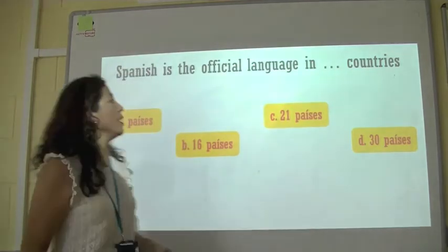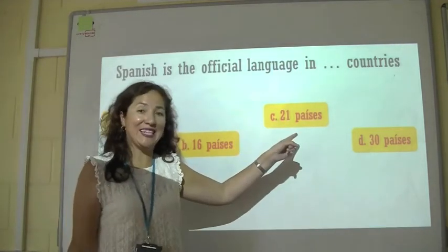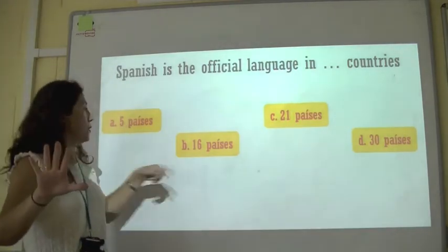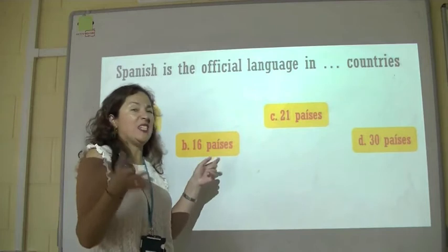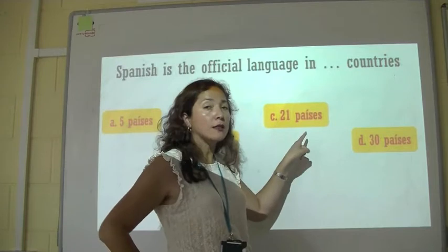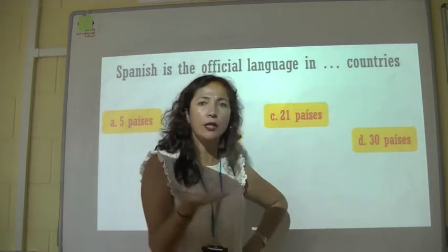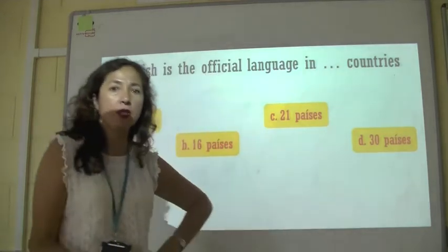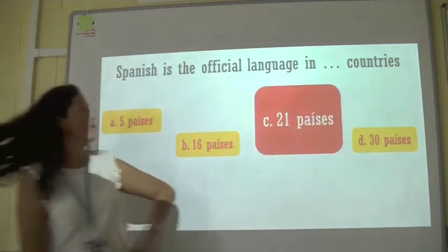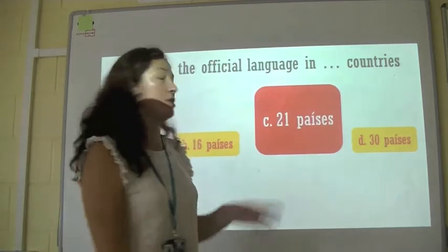Let's have a look. We have some options. In Spanish, countries are called países. What do you think — is it 5 países, 16 países, 21 países, or 30 países? The answer is 21 países — 21 countries have Spanish as their official language.